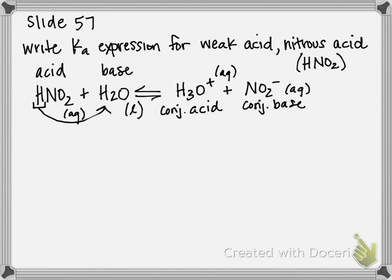So to write our expression, we're going to say Ka, and that's just the equilibrium constant for acids. A stands for acids. And it's the product concentrations multiplied by one another over reactant concentrations. So our Ka for this is going to be concentration, that's what those little brackets mean, of H3O plus times NO2 minus. And the equation is already balanced, so we don't need to raise these to the power of anything.